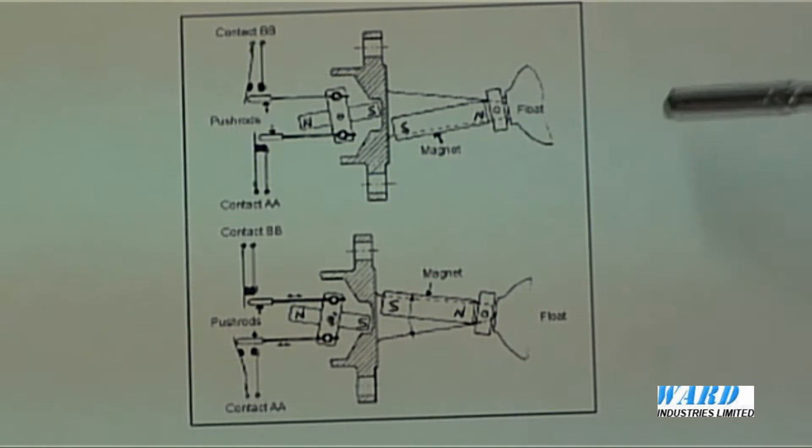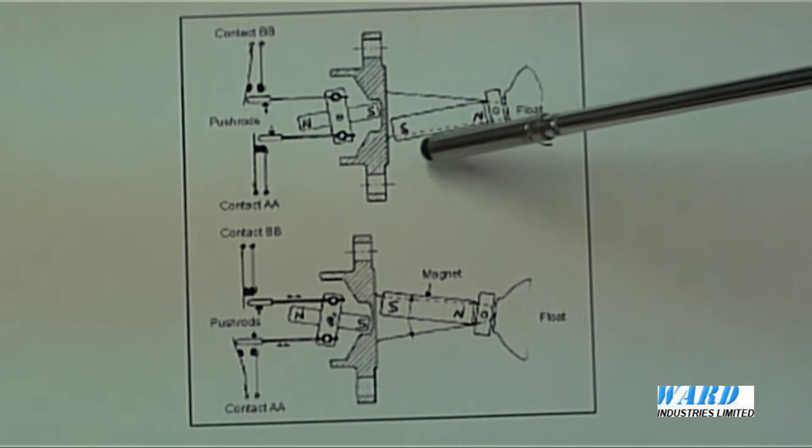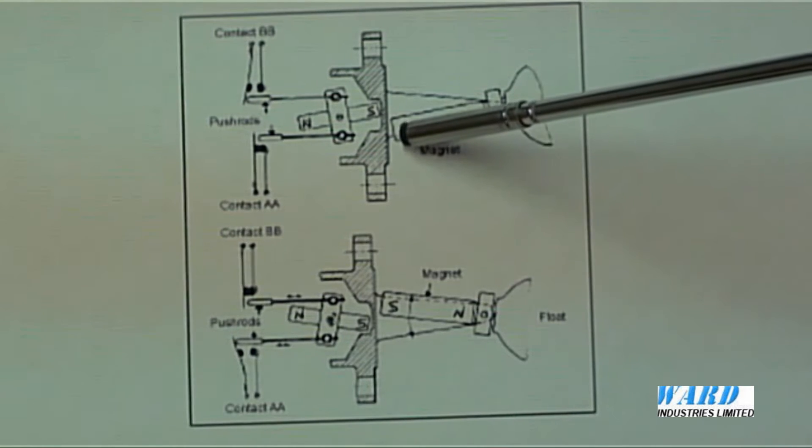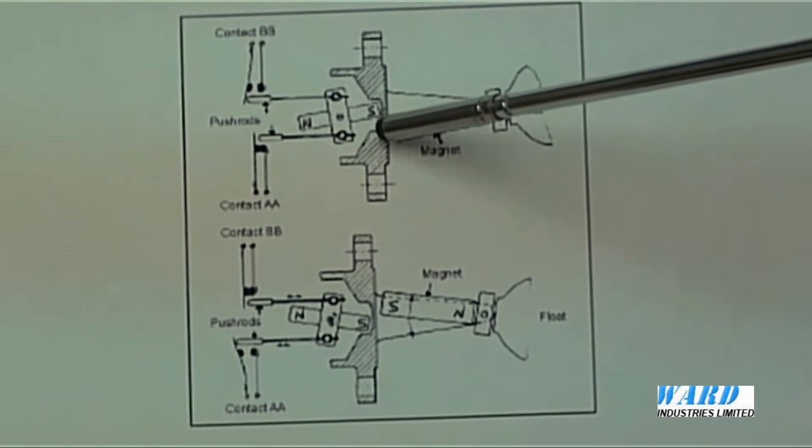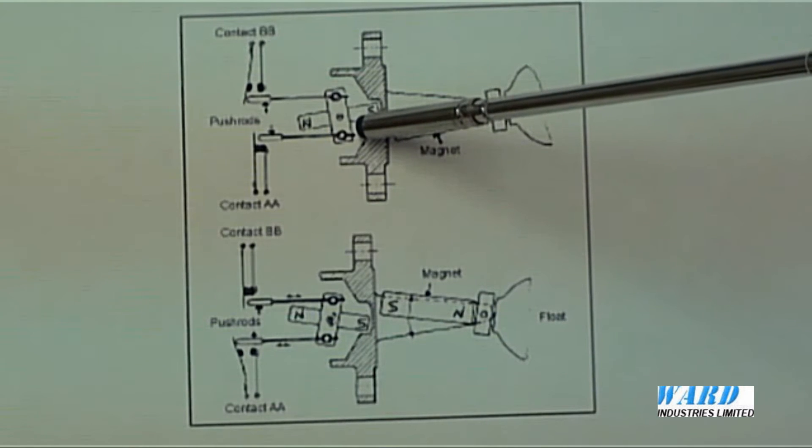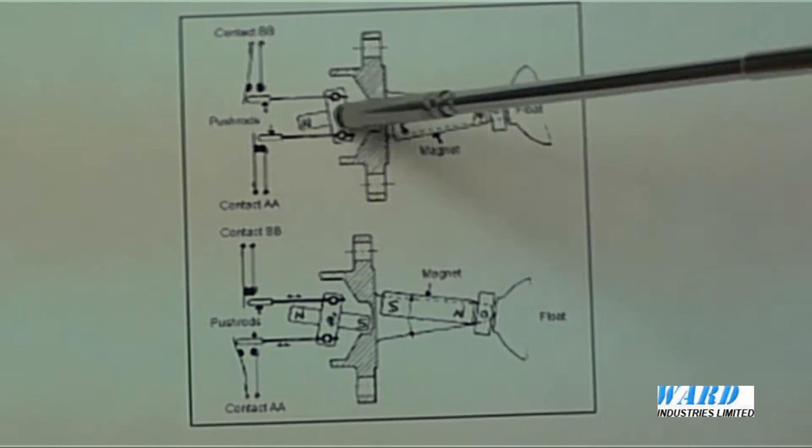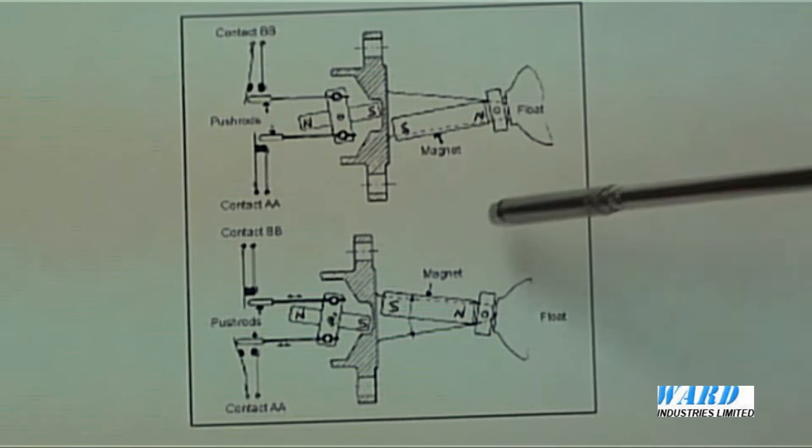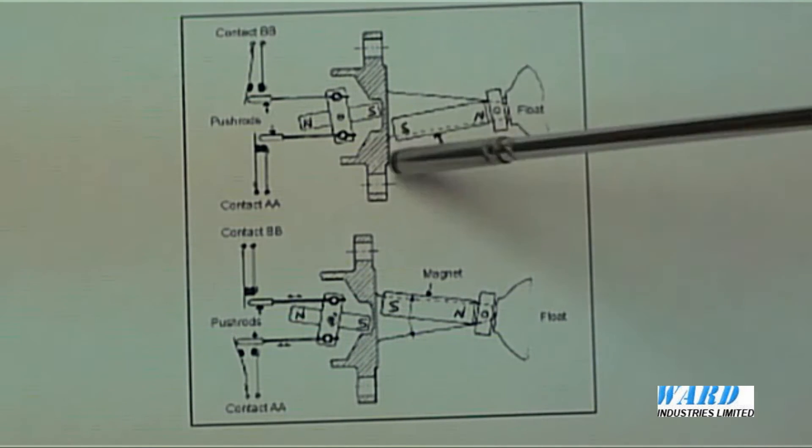Consequently, a change in liquid level, here you can see the float in the high level position. As that falls, this magnetic pole will face directly the same pole in the switch head mechanism through a non-magnetic diaphragm here.